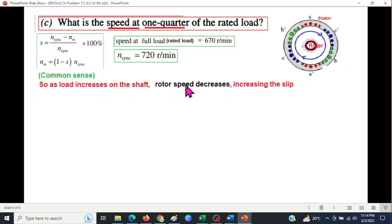Now just by using common sense we can see that as the load increases on the shaft, the rotor speed will decrease. And if the rotor speed decreases then obviously the slip will increase, because there will be a gap between the stator speed and the rotor speed. So the slip will increase.